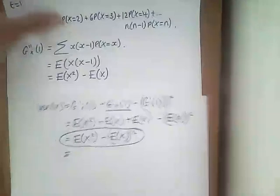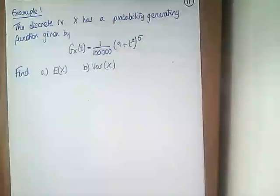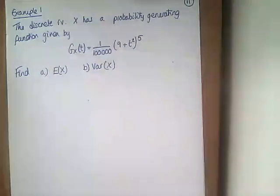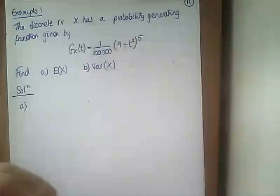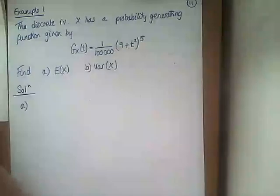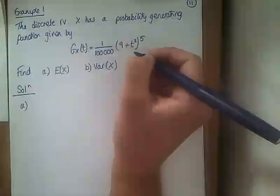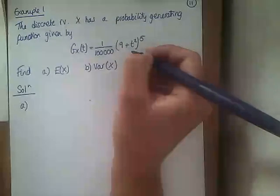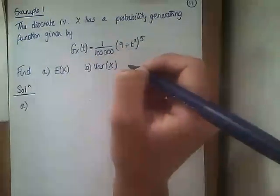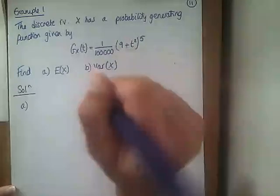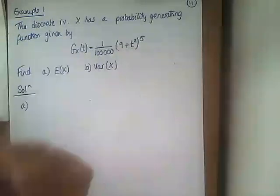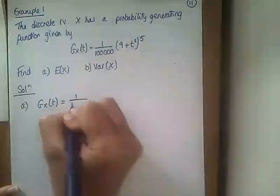Here's an example. The discrete random variable X has a probability generating function given by (1/100,000)·(9 + t²)^5, and we've got to find E(X). The proof is the trickiest bit — actually doing it is not very tricky at all. Note that this requires differentiating using the chain rule, so I'll treat this as though you know the chain rule.